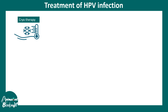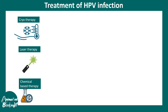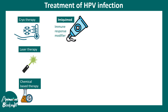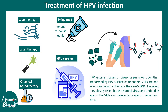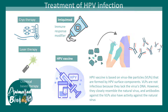Treatment of HPV infection can be done using cryotherapy with liquid nitrogen, laser-based removal, or chemical-based therapy such as salicylic acid. Imiquimod is an immune response modifier that can help treat warts. An HPV vaccine also exists — it contains capsid proteins so that when injected, the body creates antibodies to neutralize HPV. When a real infection occurs, those pre-existing antibodies can fight it. The HPV vaccine drive has almost eradicated cervical cancer caused by HPV infection.